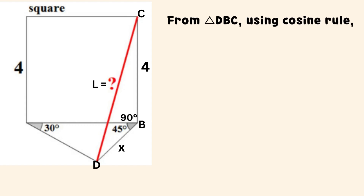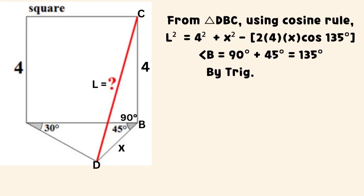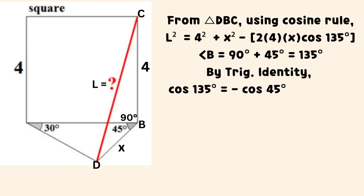It implies that X equals the product of 2 and the square root of 2 after simplification. From triangle DBC, using the cosine rule, we obtain an equation for the square of L as shown on the screen. Angle B equals 135 degrees.